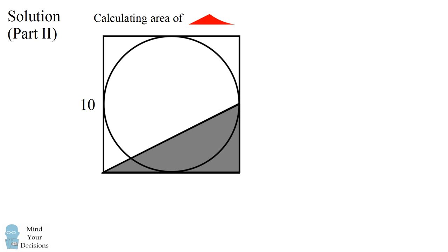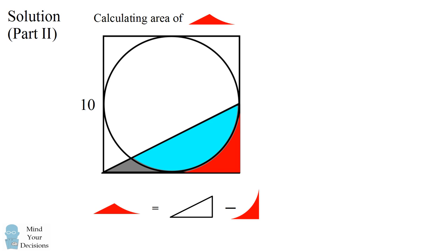We can again solve this by subtraction. We consider this right triangle. We're going to remove this portion from the lower right-hand corner, and then we're going to remove this portion of the circle. What remains is the area of the lower left-hand corner. So we set up our formula: the area we want is equal to the area of the triangle minus the area of this piece in the lower right-hand corner minus this piece of the circle.